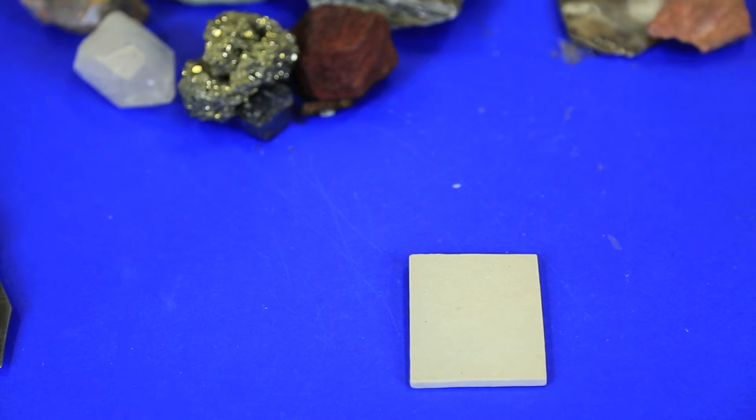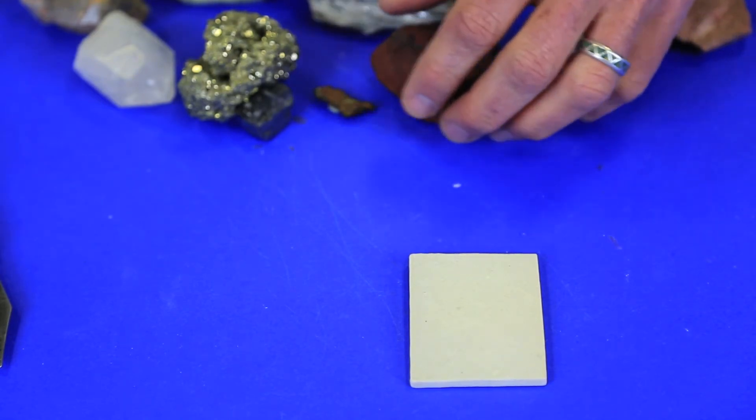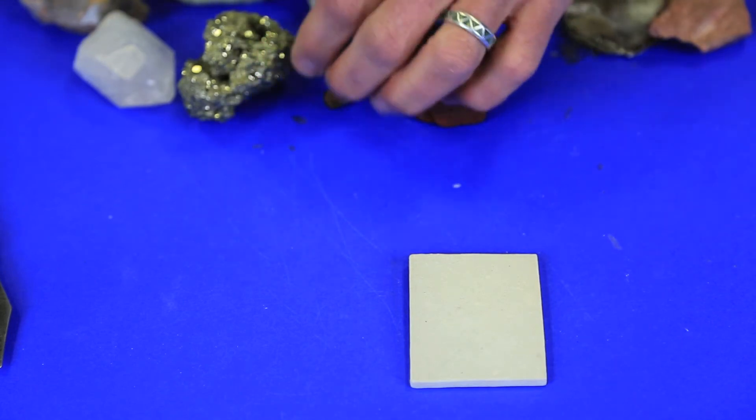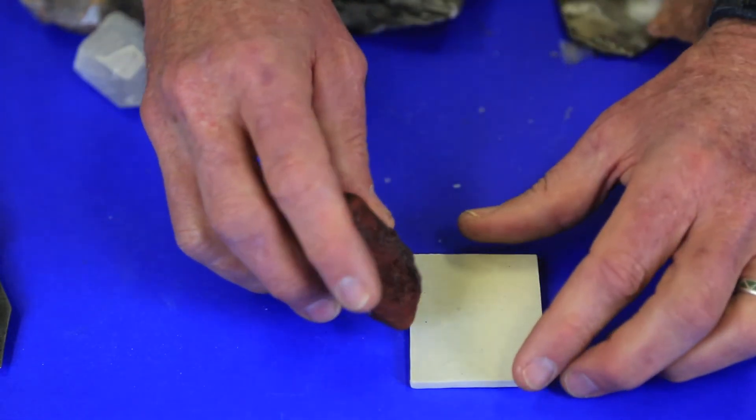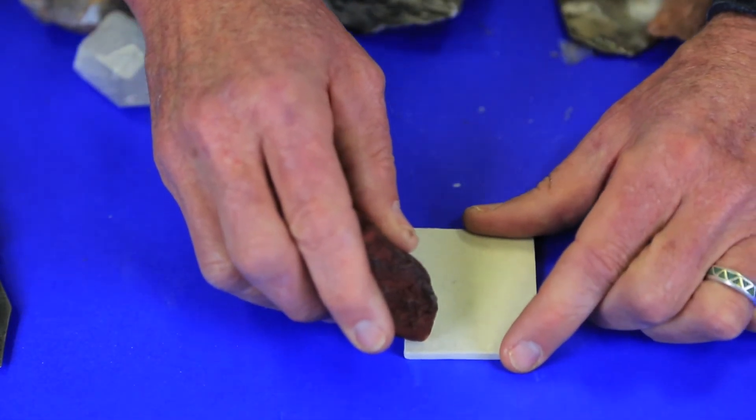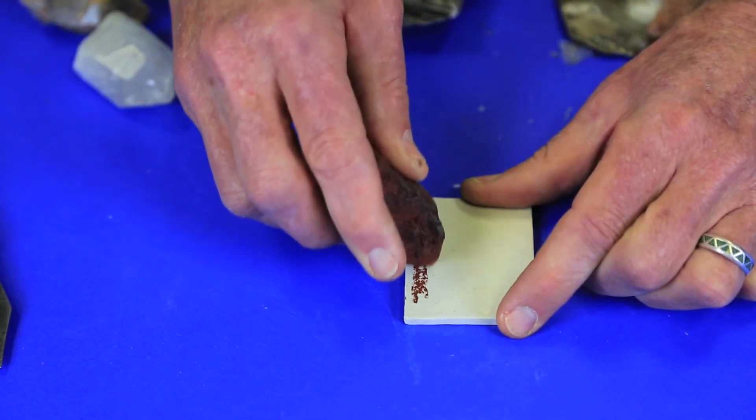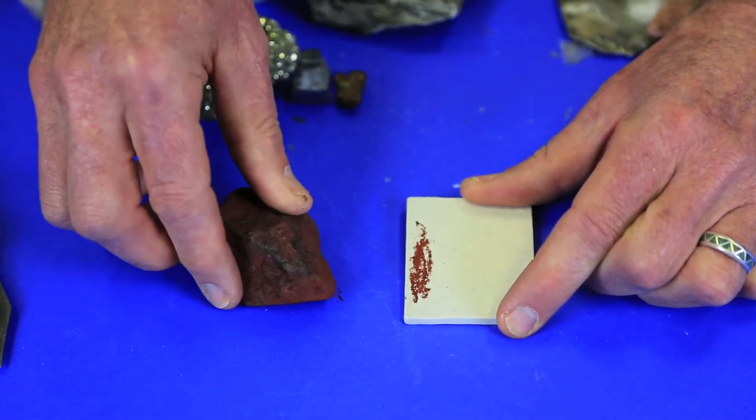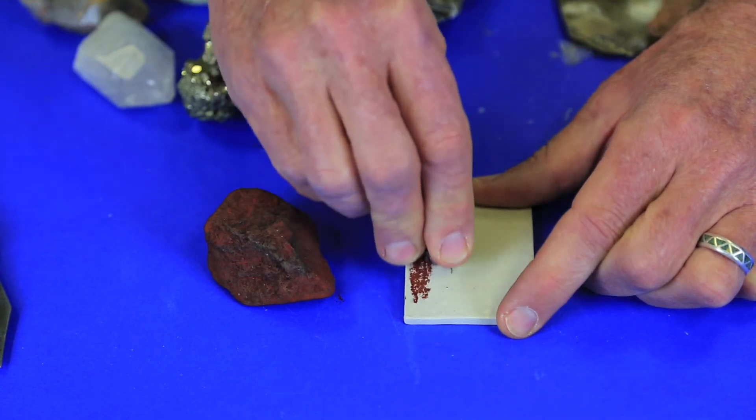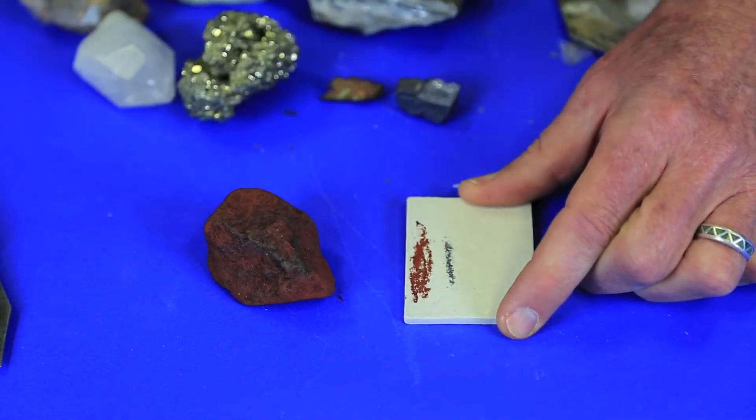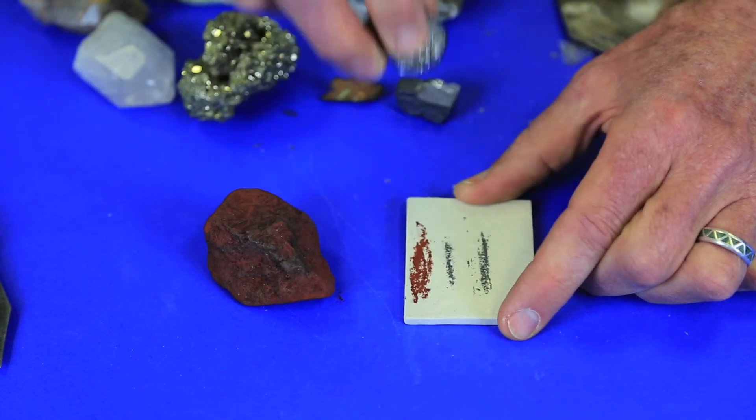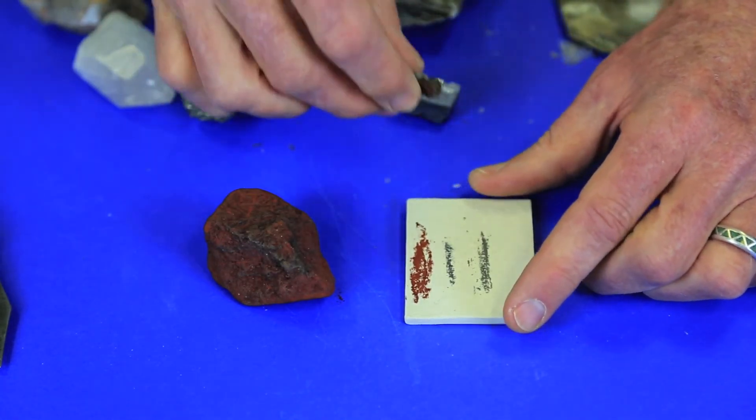The last property we'll consider is a property called streak. To test for streak you're going to use one other tool that's in your set, the streak plate. This is a piece of white unglazed porcelain and the test works very similar to the hardness test. You're going to scratch or rub your mineral across the surface of the streak plate and observe the color that's left behind. The color of the streak is most important for your metallic minerals. Other non-metallic minerals may leave a streak but it's not as diagnostic as it is for metallic minerals.